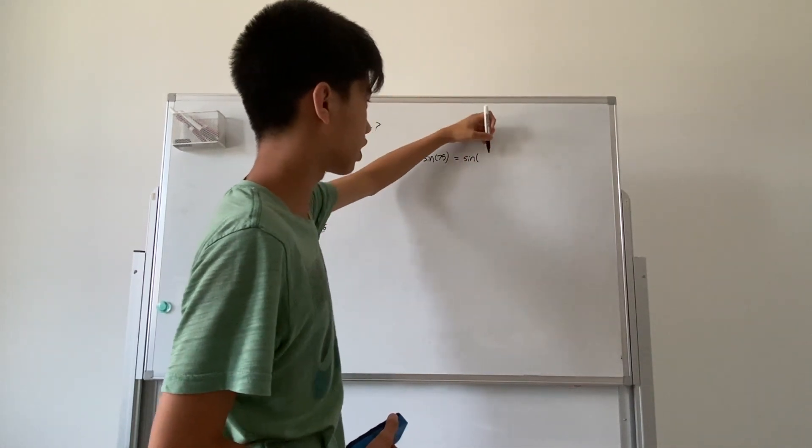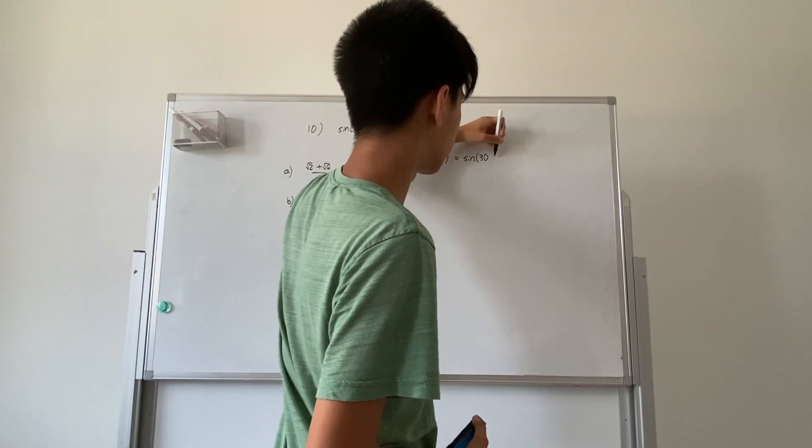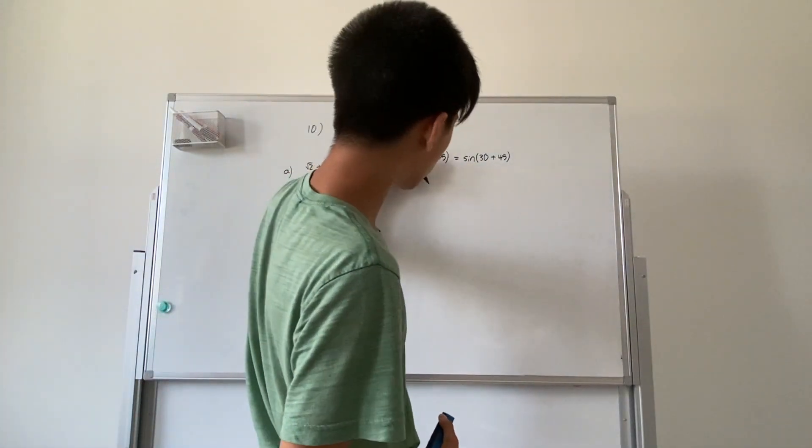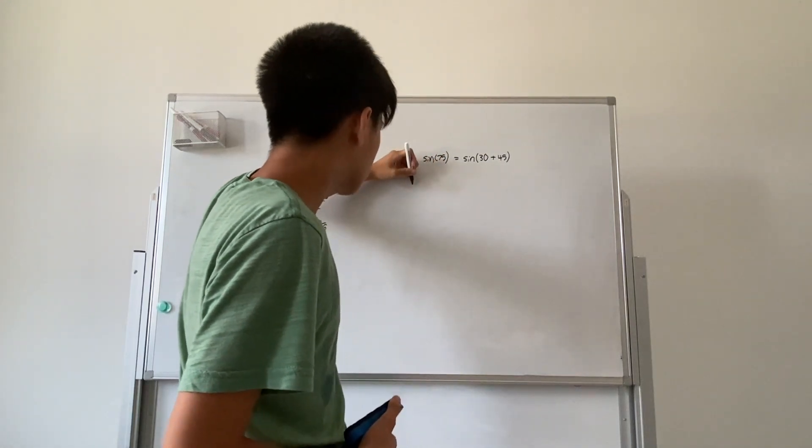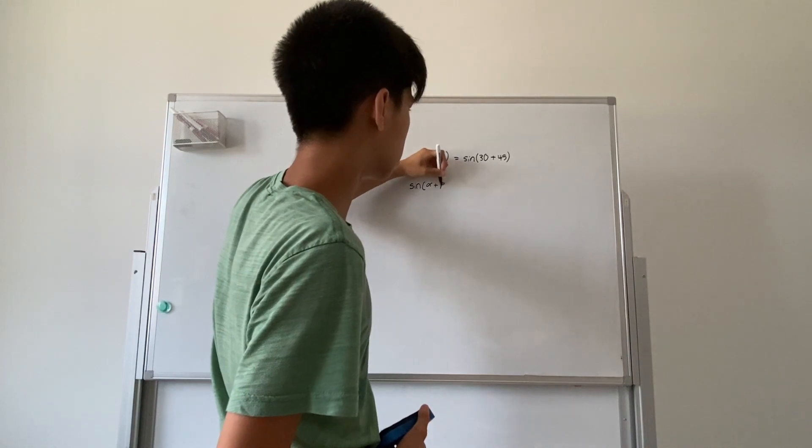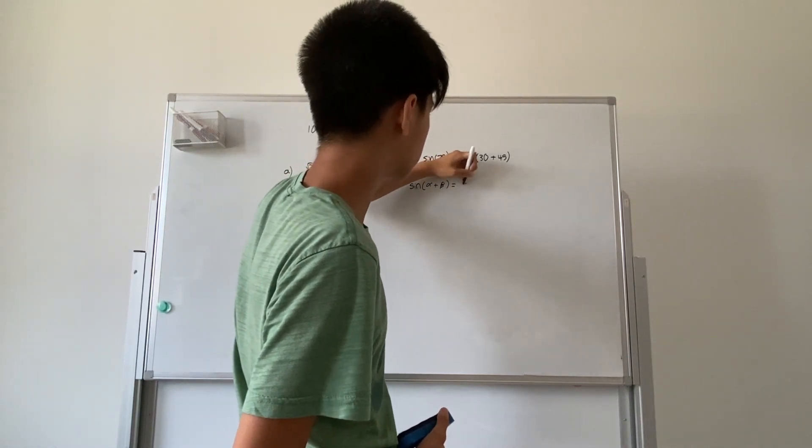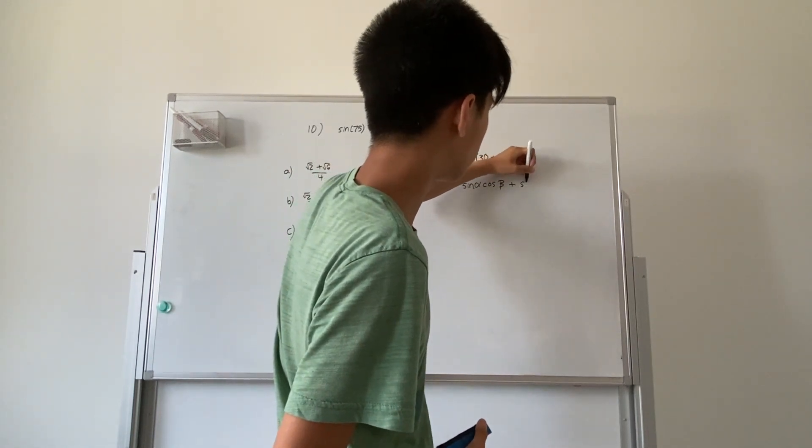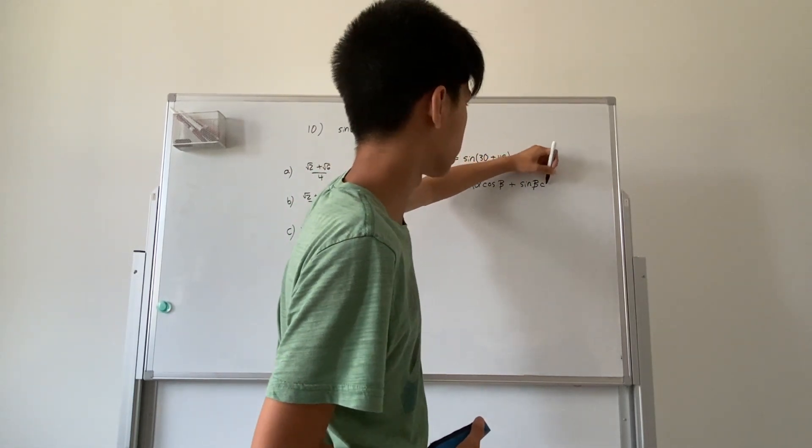Sine of 75 is the equivalent of sine of 30 plus 45 degrees. If you remember from the trig identities, sine of alpha plus beta equals sine alpha cosine beta plus sine beta cosine alpha.